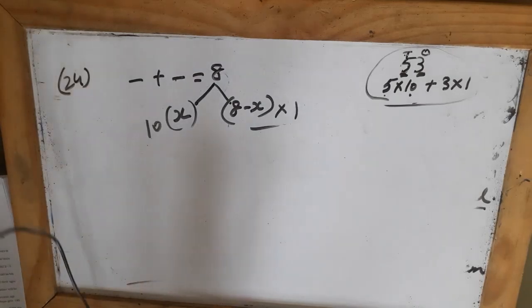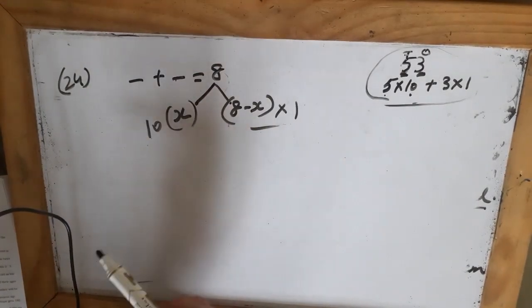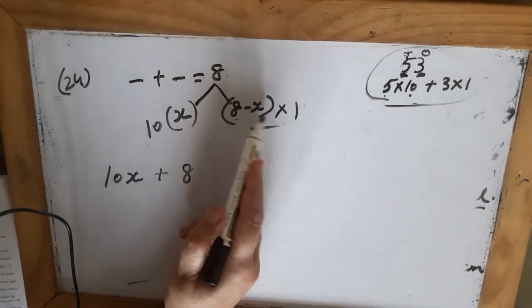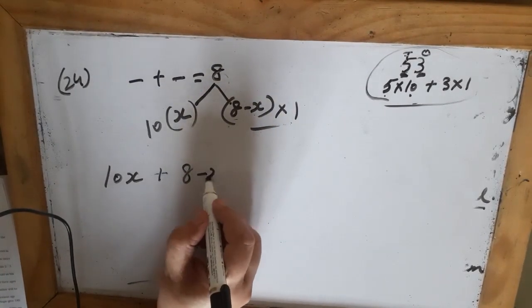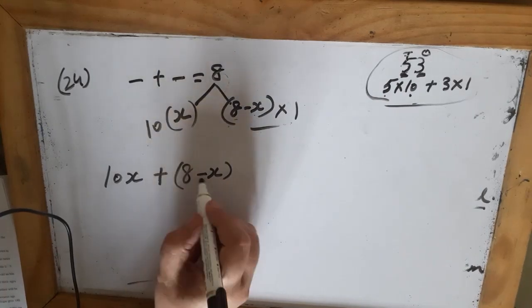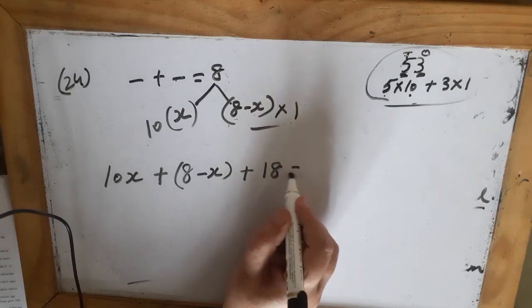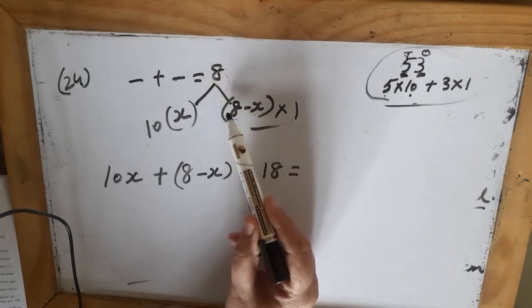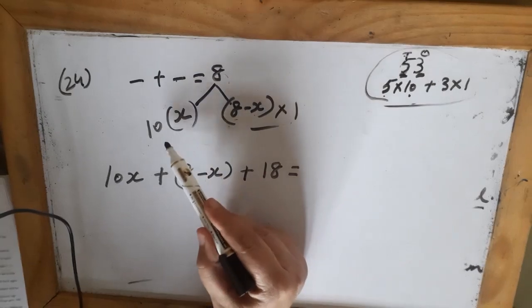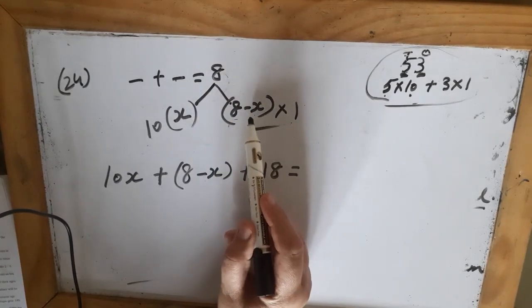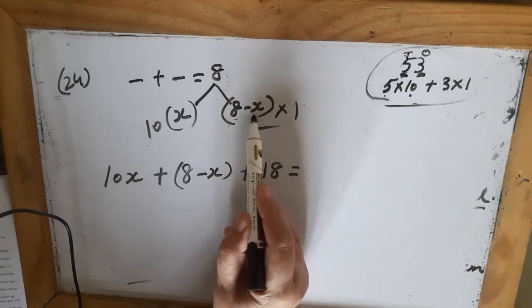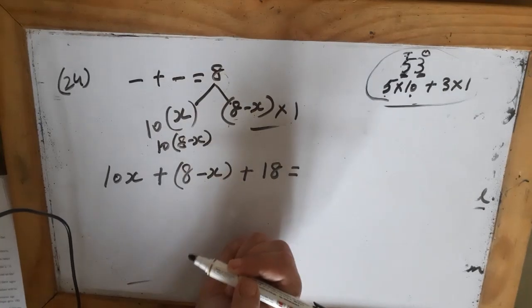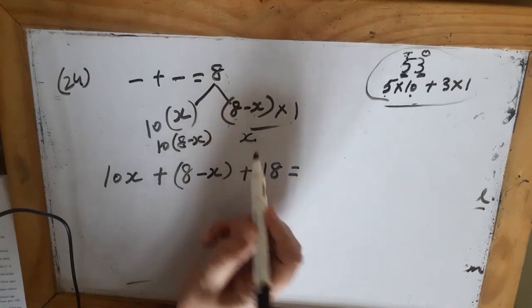They say if 18 is added to the number, the digits get reversed. So the original number is 10x plus (8 minus x). When we add 18, the digits are reversed — the digit at the ones place goes to the tens place and vice versa. So 8 minus x will come to the tens place and x will come to the ones place.